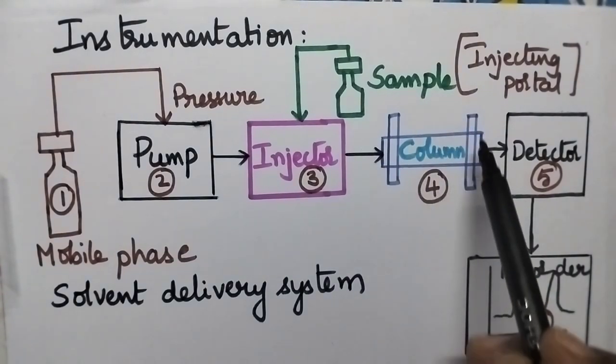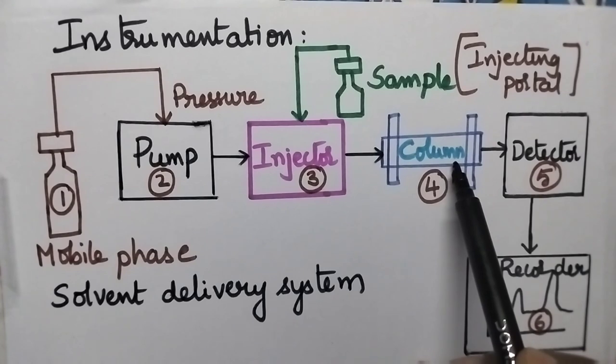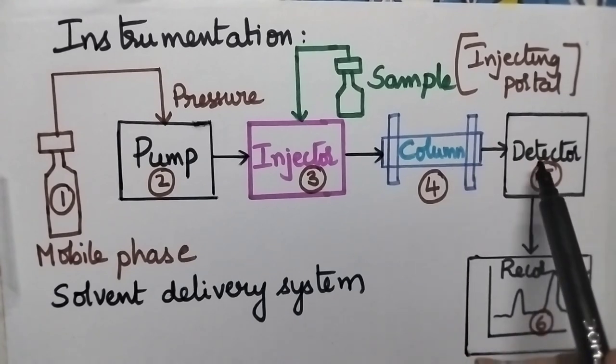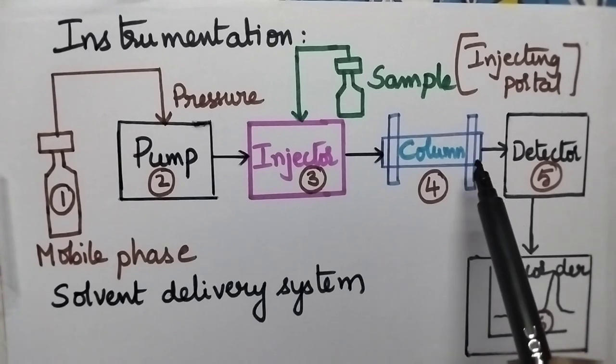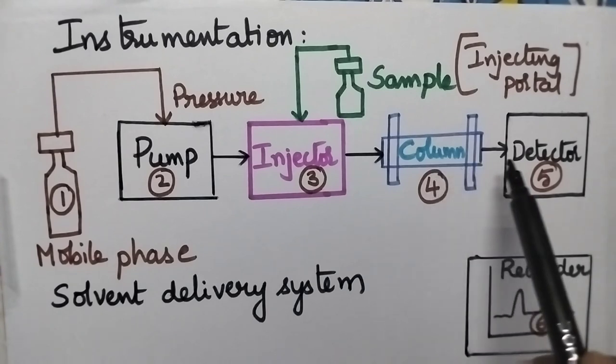The complete separation takes place in the column and with the help of a detector it is possible to detect the flow rates and separation of the components.